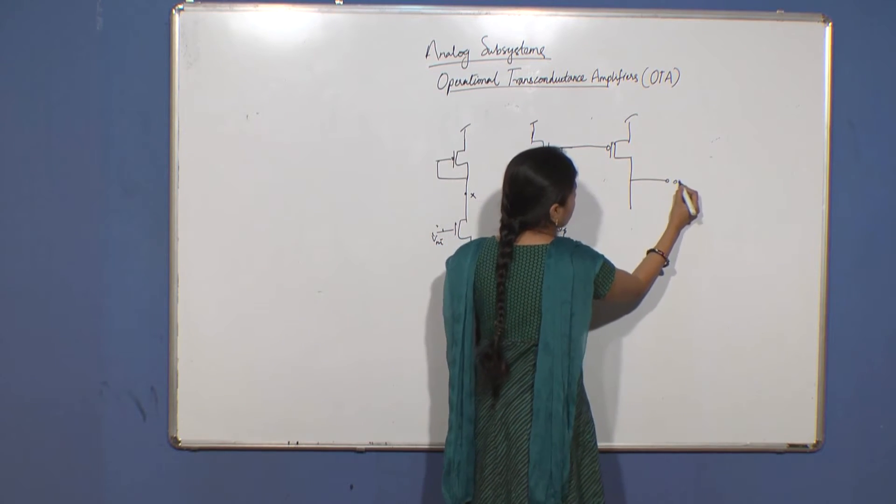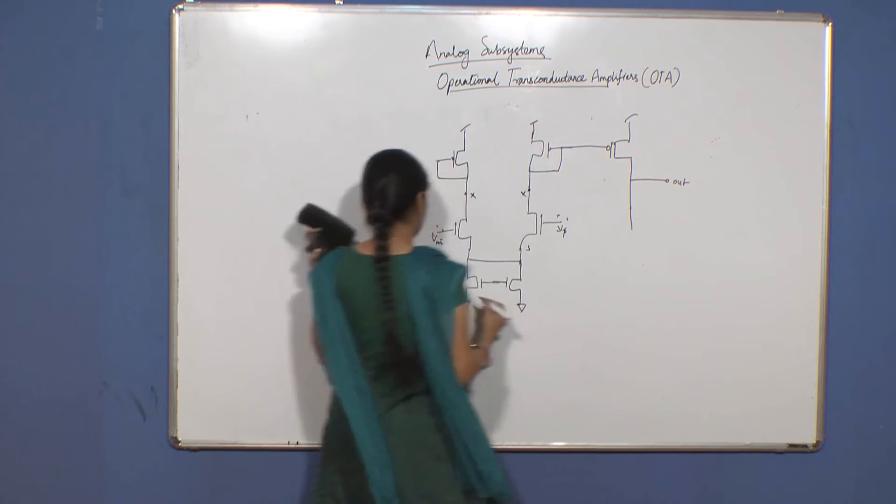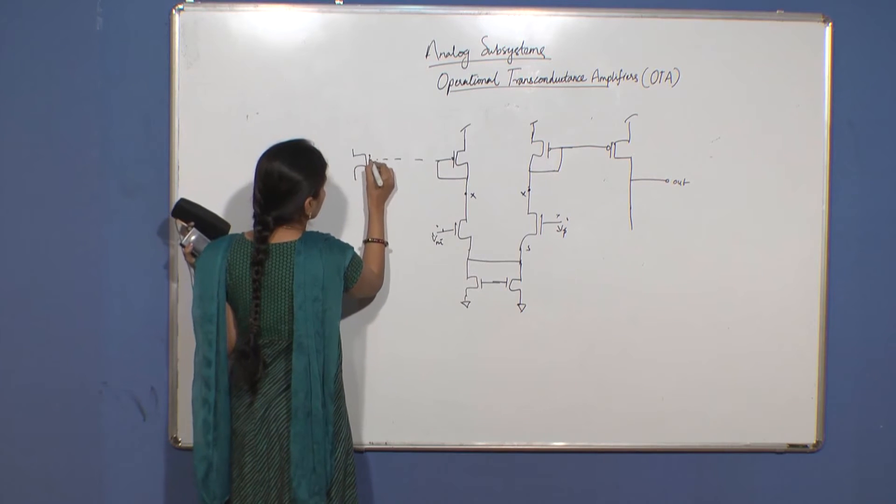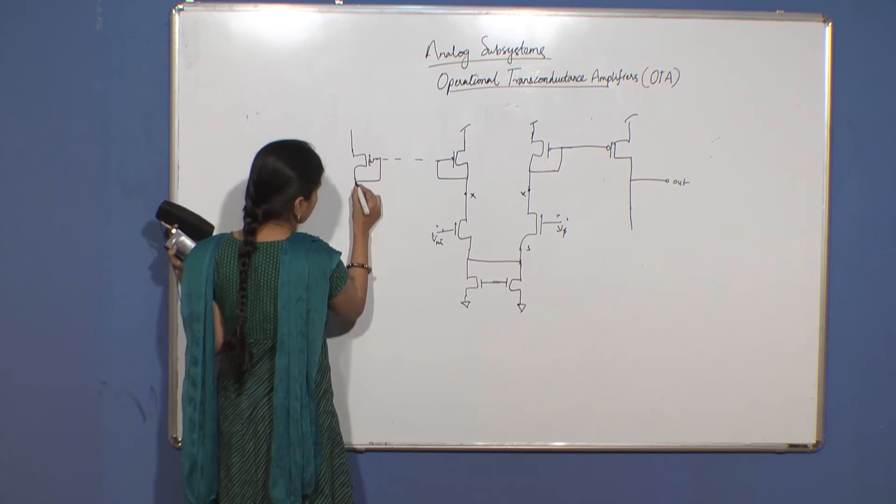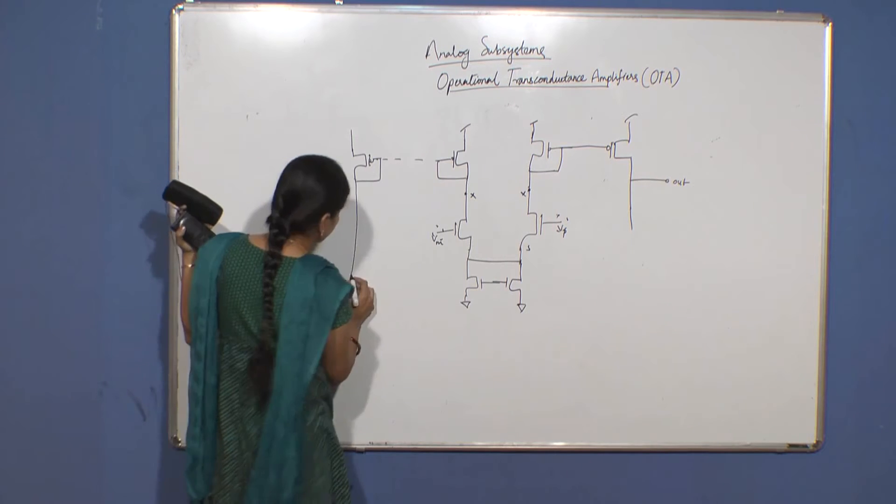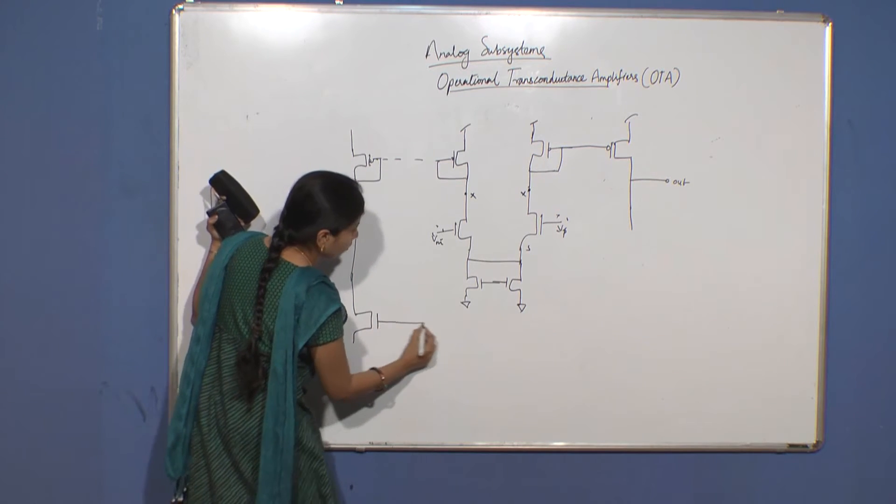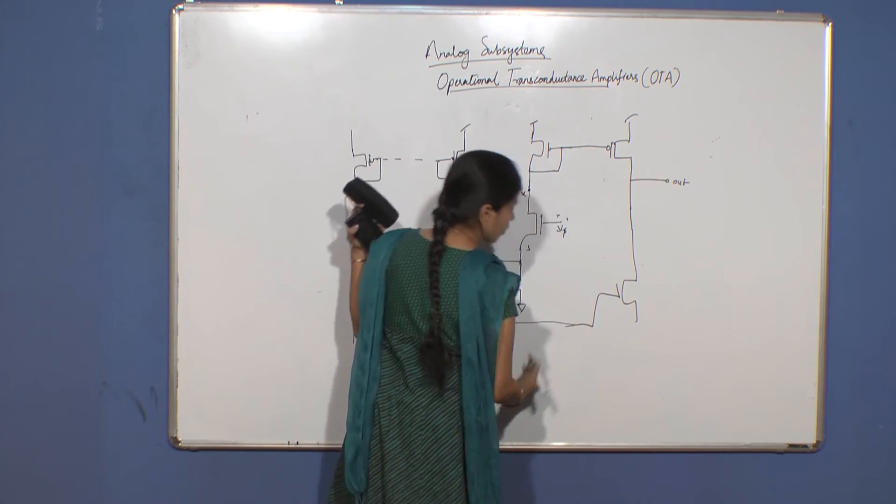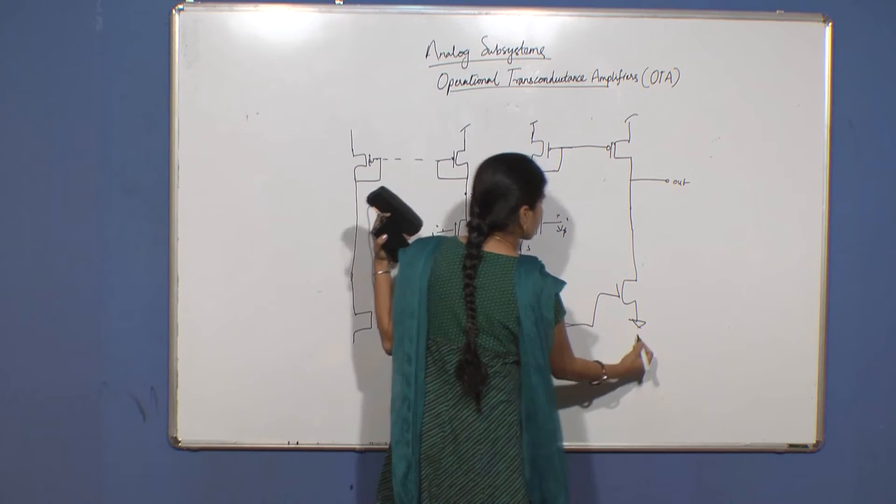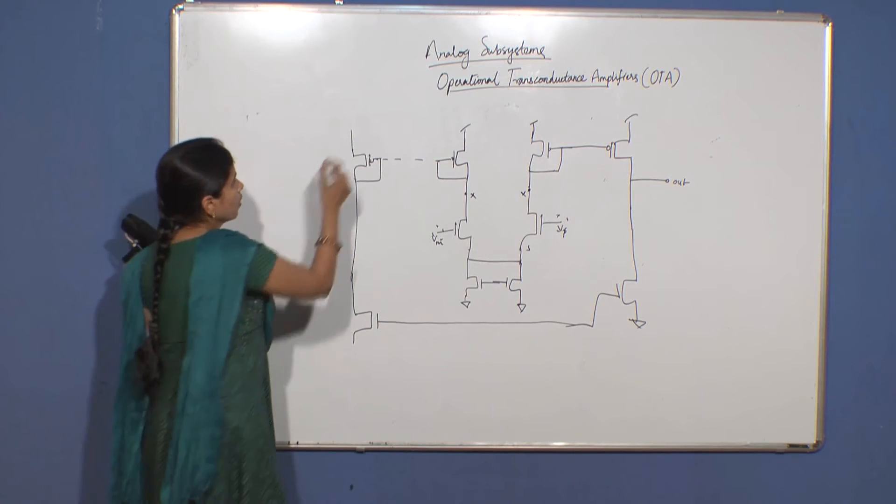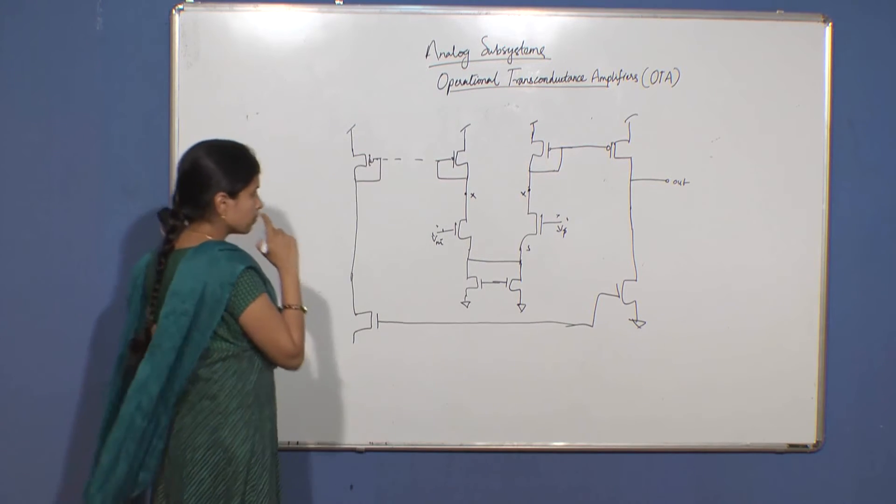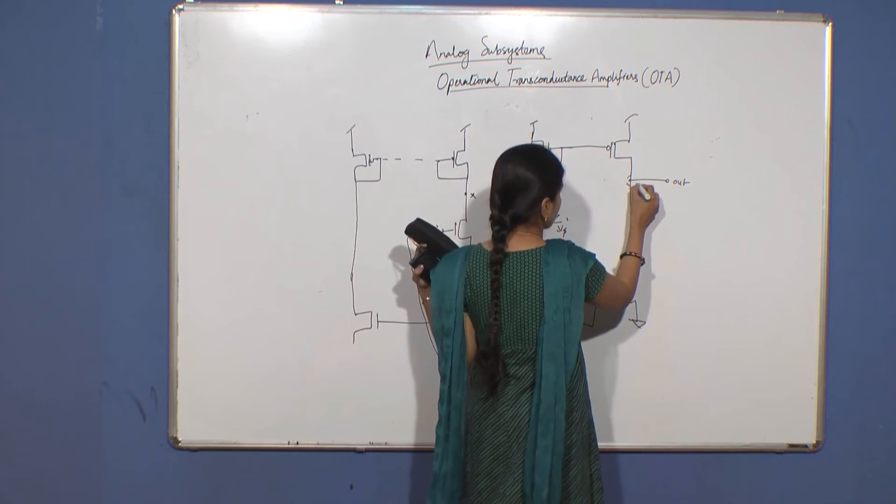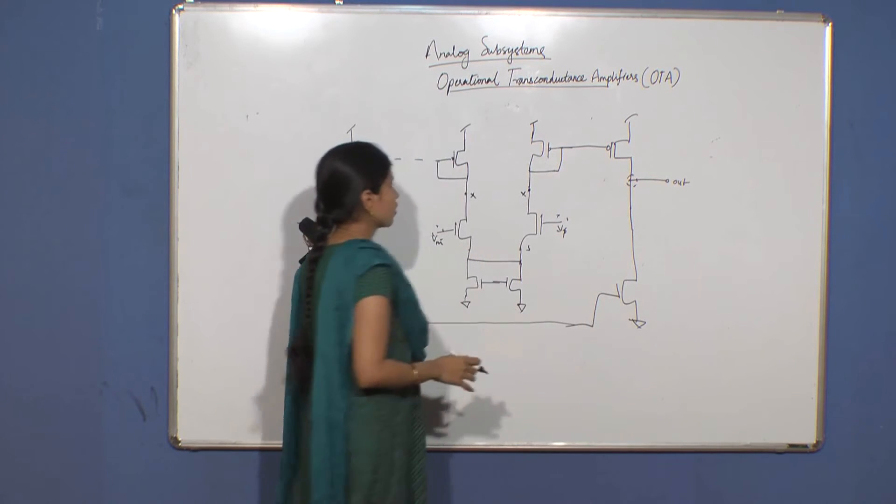So you can take an output here, and then you have input nodes. Now this is a high impedance node, and you have the inputs which are high impedance nodes.